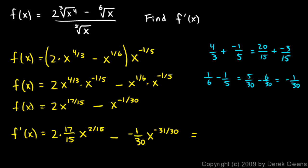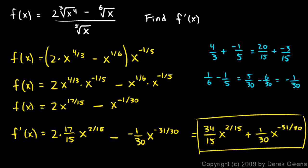So my final answer is going to be 34 over 15 x to the power of 2 fifteenths plus 1 thirtieth x to the negative 31 thirtieths. And that's the derivative of my original function. And that looks like kind of a messy, difficult, complicated answer. But that's the simplest answer, the simplest way to write it. And that's a whole lot easier way to get there than trying to go straight to the quotient rule or the product rule.